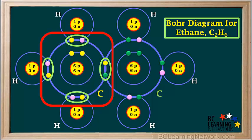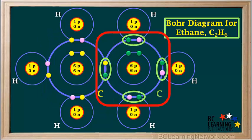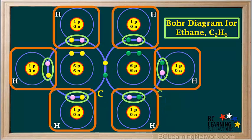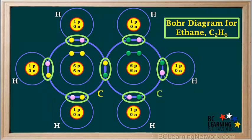The carbon atom on the left has a stable octet. And the carbon atom on the right also has a stable octet. And each hydrogen atom has a pair of electrons, like the noble gas helium. So all the atoms in this molecule are stable, as long as they remain connected by these seven covalent bonds.